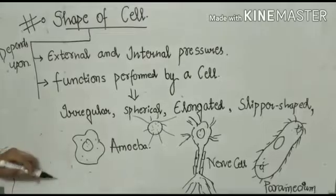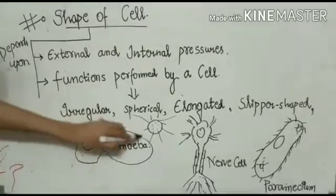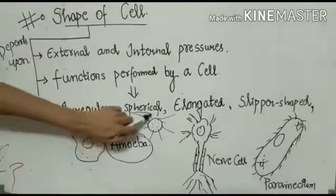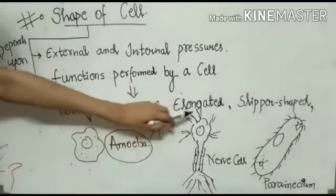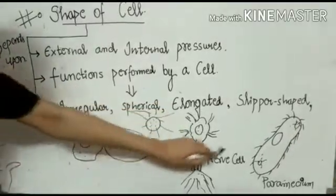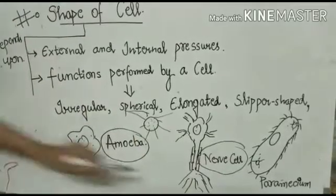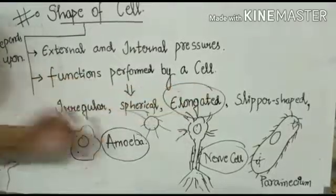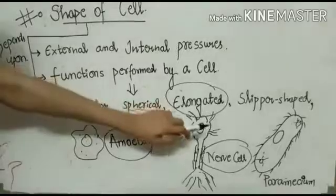If we talk about irregular shapes, then a very good example is amoeba. Spherical shape and then elongated shape which is called nerve cell. I have told you that the longest cell is the nerve cell. Obviously if it's elongated, then it's the longest cell.